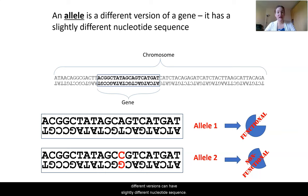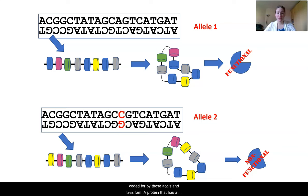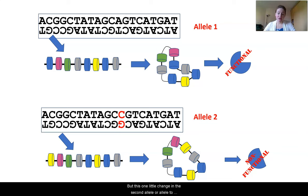Not all different nucleotide sequences will dramatically change the shape of the protein, but some can make them non-functional. Our Pac-Man protein, when coded for by the first allele, is a functional protein because the amino acids form a shape that allows the active site to do its job. But one little change in the second allele can cause the protein to not be able to do its job, because it changes the active site of that protein.